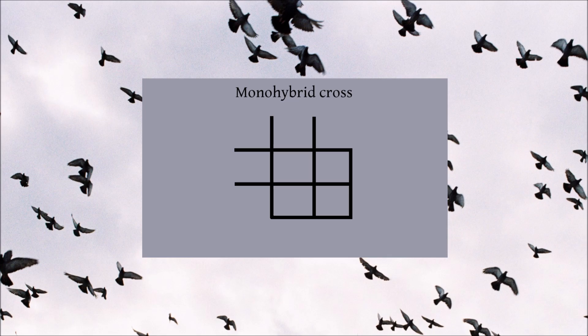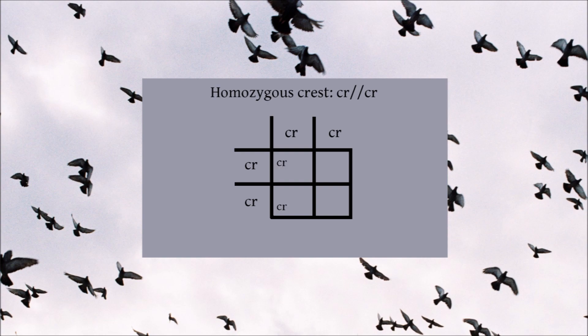Let's start with two crested birds paired together — both parents are homozygous crest. So we place CR at the space for each chromosome on both parents: CR and CR at the top, and the same down the side. Now we can fill in the four boxes. Starting with the father, we fill in CR in all the boxes. Then the same with the mother. Because both parents passed on crest to all their offspring, all the young are homozygous for crest.